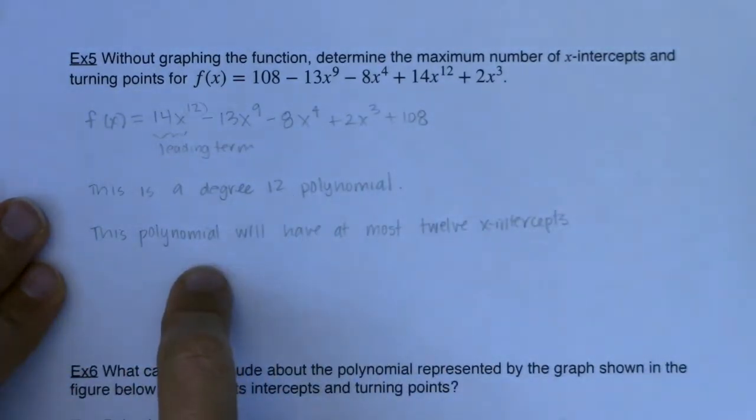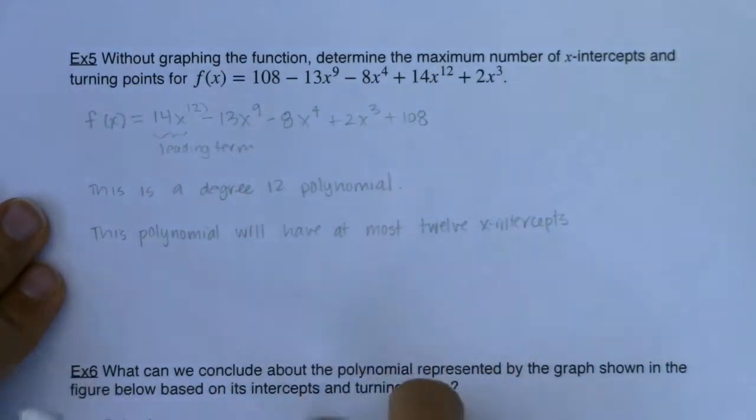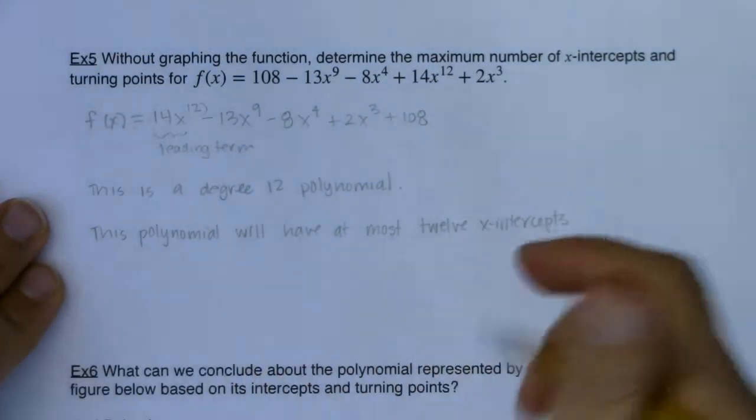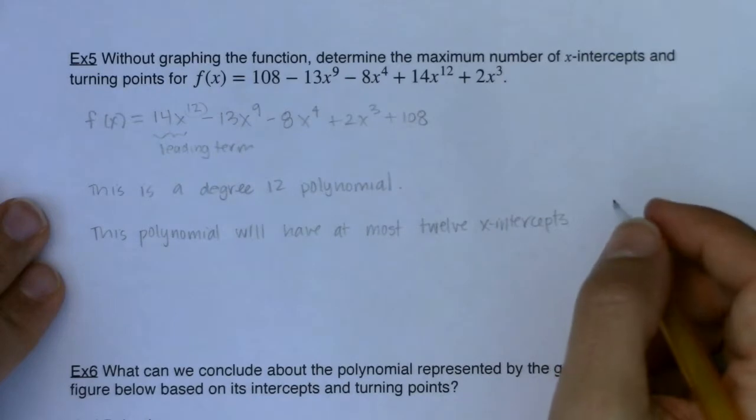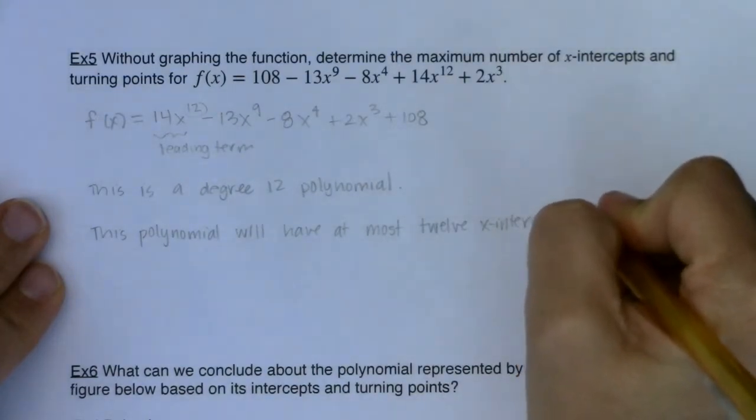So we'll have at most 12 x-intercepts and at most 11 turning points. And that would also be a lot to find, right?